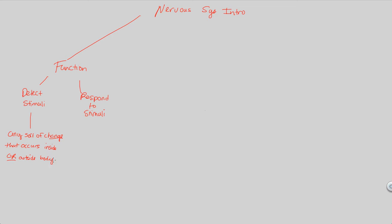What we mean by this is the following: you may feel something, or your body internally may sense something. These are all detections of stimuli — environmental cues that can be detected and will be responded to. That's the other half of the nervous system. The response to stimuli is simply the action that happens when the human body carries out an action. When a change is detected, whether it's internal or external, that is the detection of stimuli.